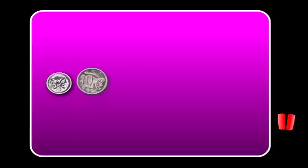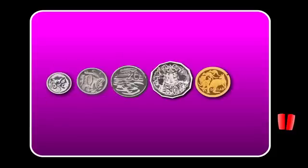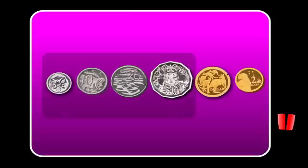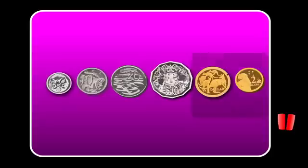Here are the Australian coins. They are all different sizes and each has a different number and picture on the back. Some coins are silver in colour — they are the cent coins. The gold coins are the dollar coins.